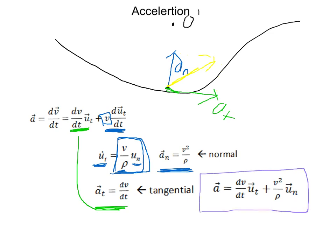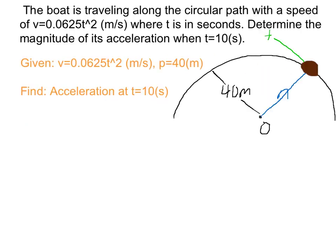One last comment on how we got from this to that is the chain rule. If you have v times u sub t and you take the derivative of it with respect to time, you'll get the derivative of v times u sub t plus v times the derivative of u sub t. And that's all it is.